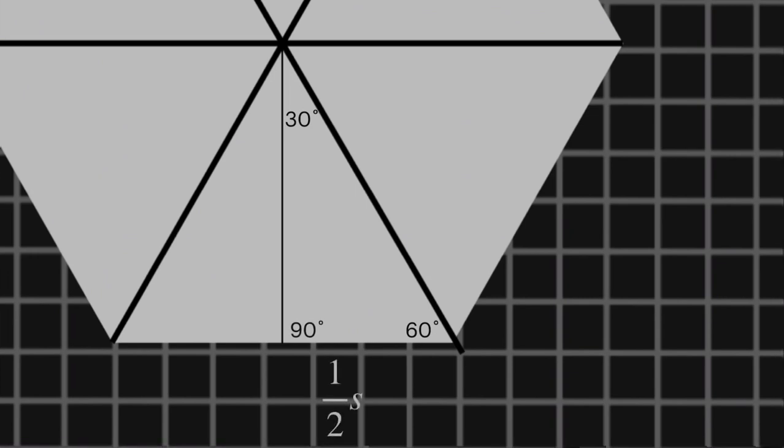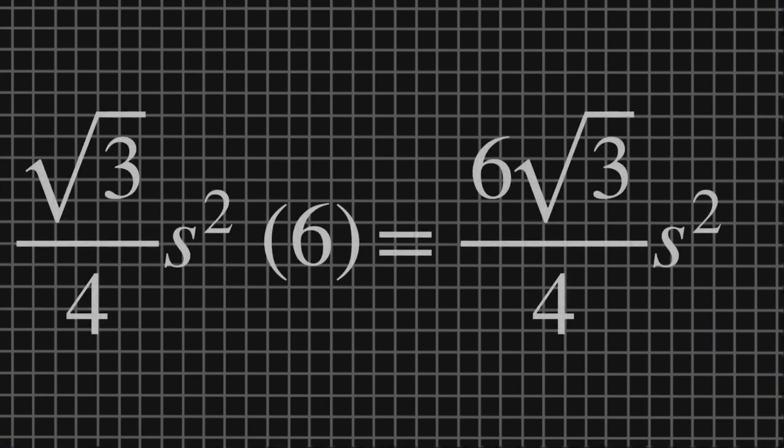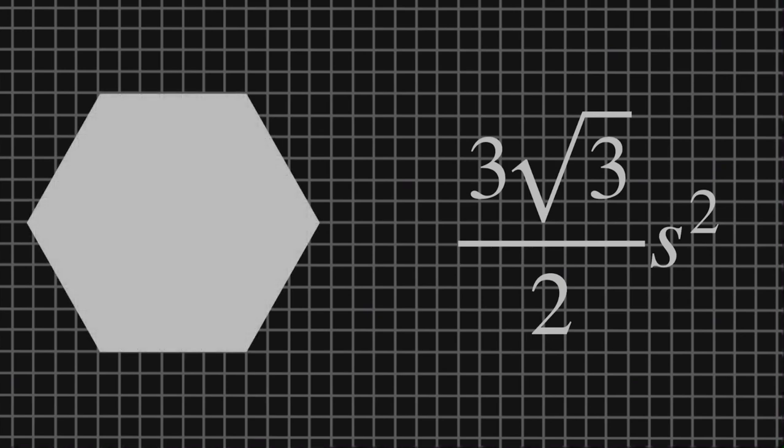The base of this triangle is a half of s, so this side will be half of s times the square root of three, which equals the square root of three over two times s. Now we plug it into the formula for the area of a triangle. So the area of one of these triangles is the square root of three over four times s squared. Since there are six triangles, we multiply this number times six, and then we just need to simplify, and that's how you get the formula for the area of a hexagon.